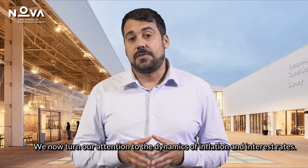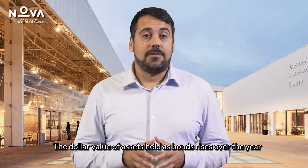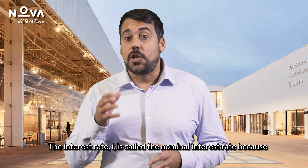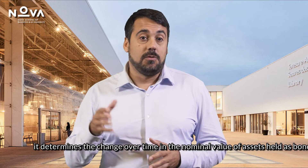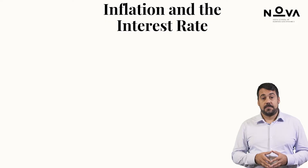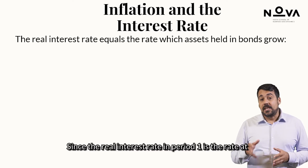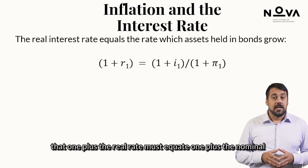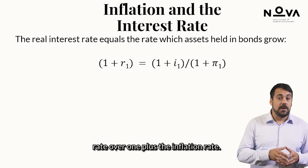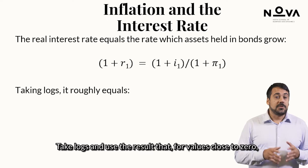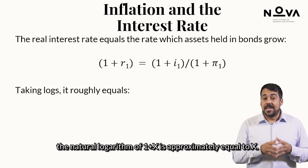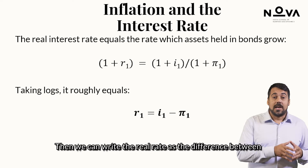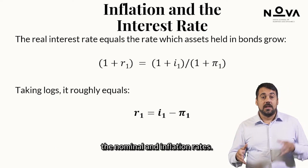We now turn our attention to the dynamics of inflation and interest rates. The dollar value of assets held as bonds rises over the year by the factor 1 plus i. The interest rate i is called the nominal interest rate because it determines the change over time in the nominal value of assets held as bonds. Since the real interest rate is the rate at which assets held as bonds change in real value, we have that 1 plus the real rate must equal 1 plus the nominal rate over 1 plus the inflation rate. Taking logs and using the approximation that the natural logarithm of 1 plus x is approximately equal to x, we can write the real rate as the difference between the nominal and inflation rates.